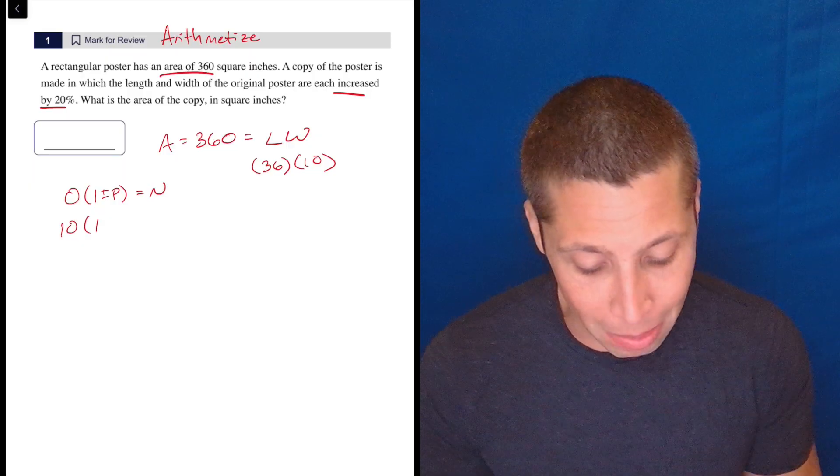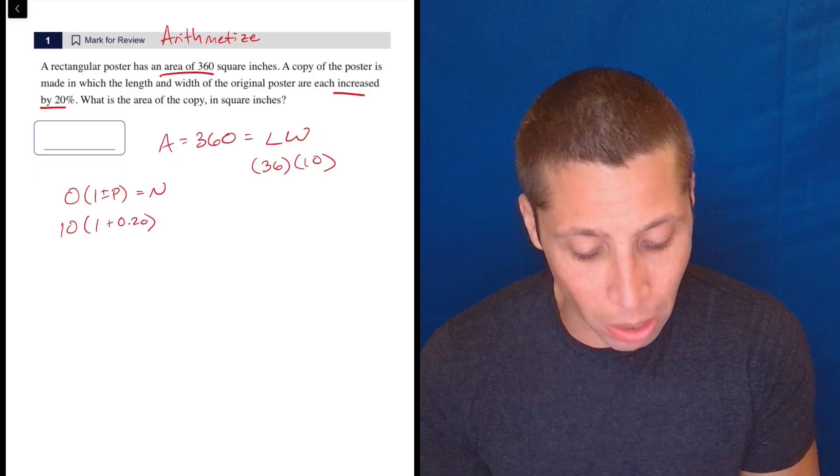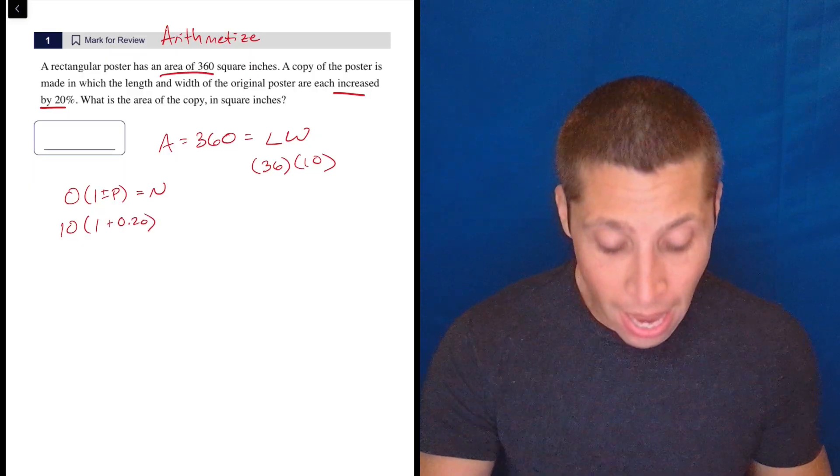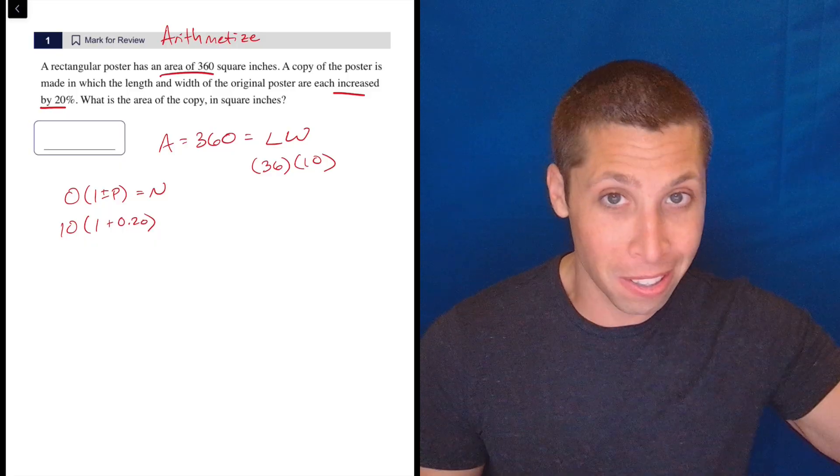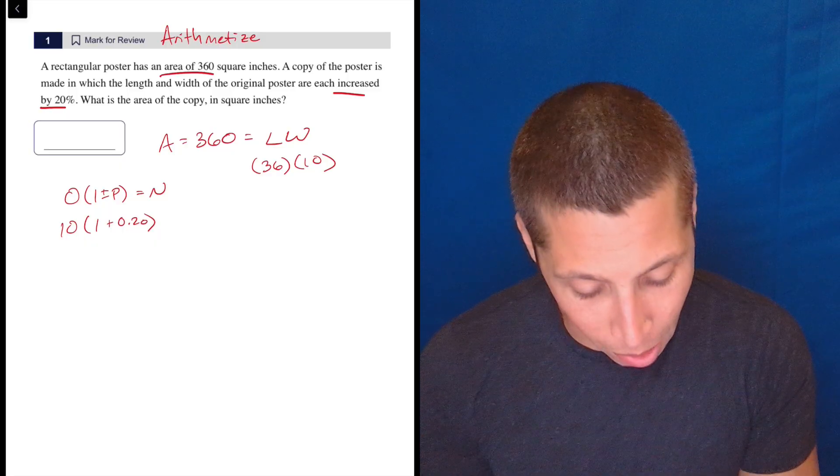which I can also do in my head is going to be 10. And then I'm increasing it by 20%. So that's 0.2 as P. And I do one plus, because it's an increase in that percentage. So 10 times 1.2 is 12.